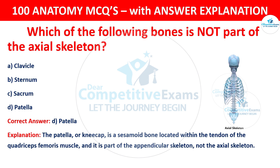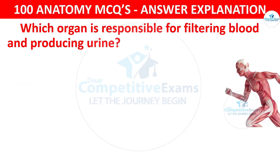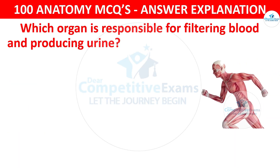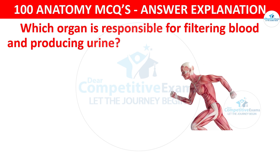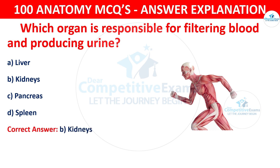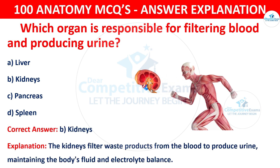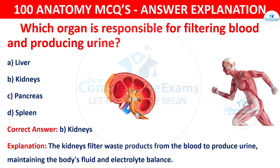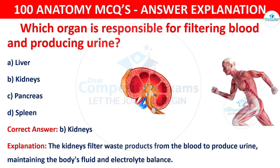Question number 90: Which organ is responsible for filtering blood and producing urine? The options are: Liver, Kidneys, Pancreas, or Spleen. The correct answer is B — kidneys. The kidneys filter waste products from the blood to produce urine, maintaining the body's fluid and electrolyte balance.